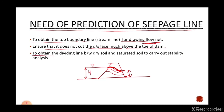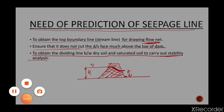Next, to obtain the dividing line between dry soil and saturated soil in order to carry out stability analysis. After determining the seepage line, we have two parts: the bottom part which is saturated, and the upper part which is dry. This division helps us in performing stability analysis of the dam.